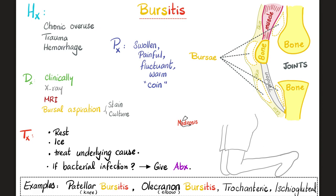Examples of bursitis? It depends on the joint. Your knee? It's called patellar bursitis. How about the elbow? Olecranon bursitis. How about the trochanter of my femur? Trochanteric bursitis. How about the ischiogleuten region? Ischiogleuten bursitis.